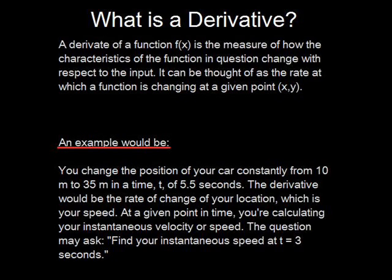An example I hope all of you can relate to would be change the position of your car constantly from 10 meters to 35 meters in a time t of 5.5 seconds. The derivative would be the rate of change of your location which is your speed. At a given point in time you're calculating your instantaneous velocity or speed.